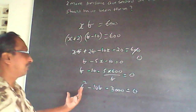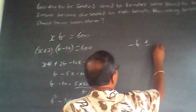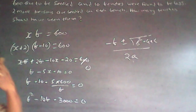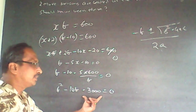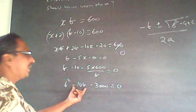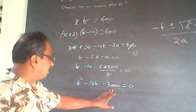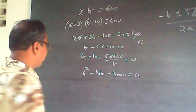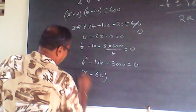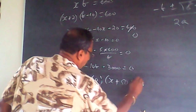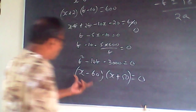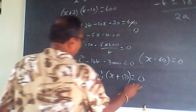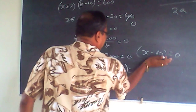You can use the quadratic formula — minus b plus or minus root of b squared minus 4ac, divided by 2a — but the easier way is to factor. We need two numbers whose product is 3000 and difference is 10. That gives 60 and 50, so we get (b minus 60)(b plus 50) equals 0. Since the number of benches cannot be negative, b plus 50 equals 0 is rejected.